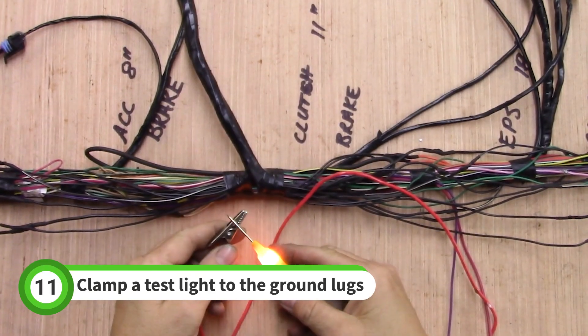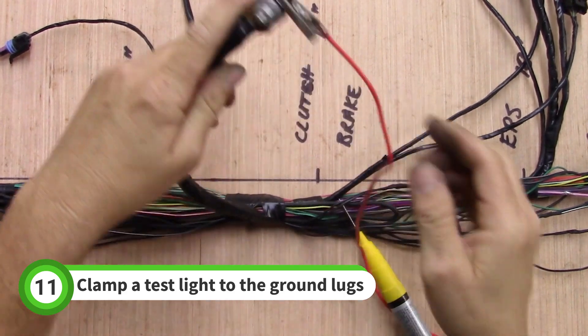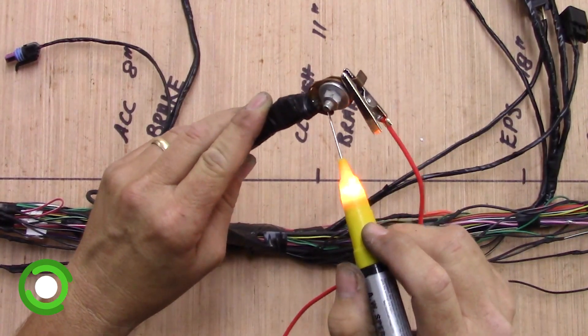After the ground wires are soldered, use a test light to check the grounds. Clamp to the ground lugs and test the light at the lugs. One by one, go through the dash connectors to check the grounds.